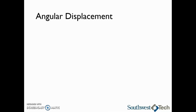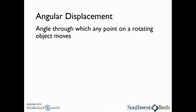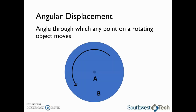The angular displacement of an object is the angle through which any point on a rotating object moves through. In this picture, even though point A is closer to the center of the circle than point B, both points have the same angular displacement. All points on the same rotating object move through the same angle in a given amount of time. Each point also moves through the same angle in one revolution, which is 360 degrees or 2 pi radians.